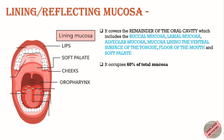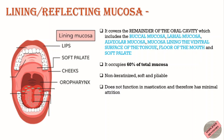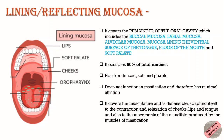Lining mucosa is non-keratinized, soft, and pliable. It does not function in mastication as it is not equally exposed to masticatory forces and therefore has minimal attrition. However, it covers the musculature and is distensible, adapting itself to the contraction and relaxation of cheeks, lips, and tongue, and also to the movements of the mandible produced by the muscles of mastication.